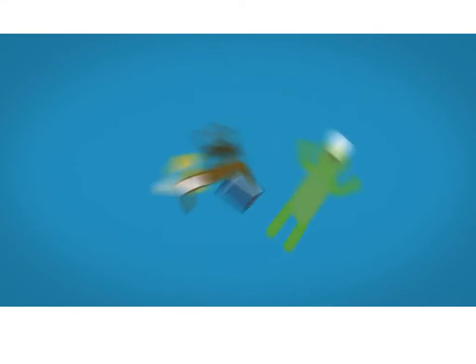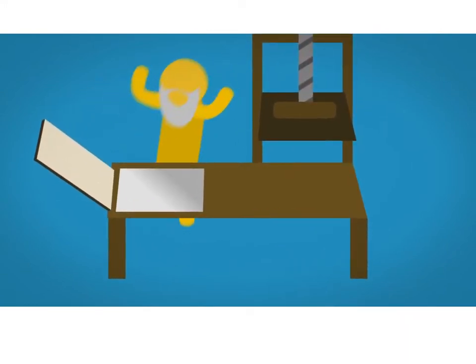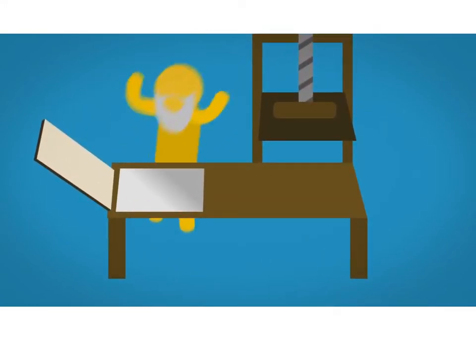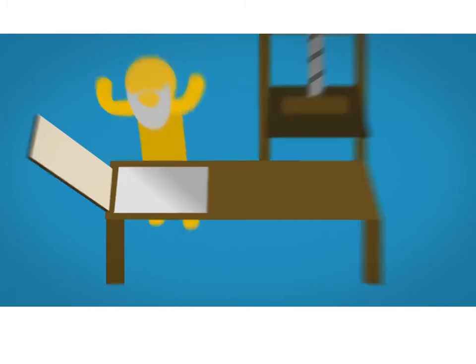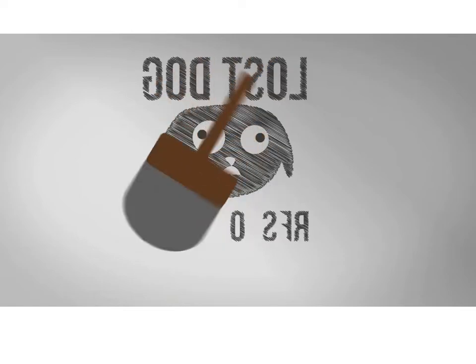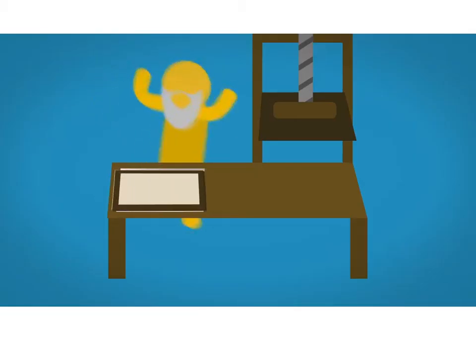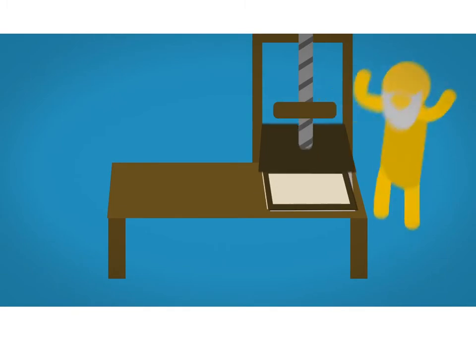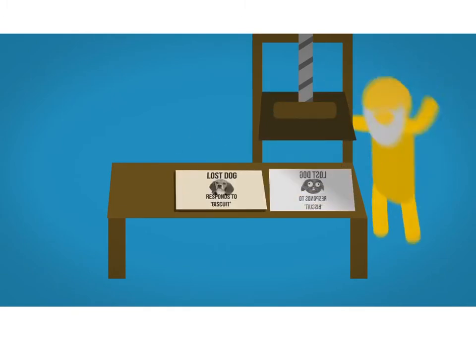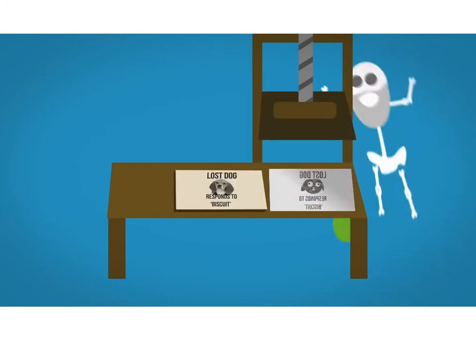This form of printing evolved to allow the reproduction of images as well, using different methods of etching a design — such as mezzotint, which is the process of roughening a metal plate with a small tool with metal teeth on it. Ink sticks to the small scratches on the metal, and the plate is then passed through a printing press. Other methods of etching included the use of acids and chemicals.